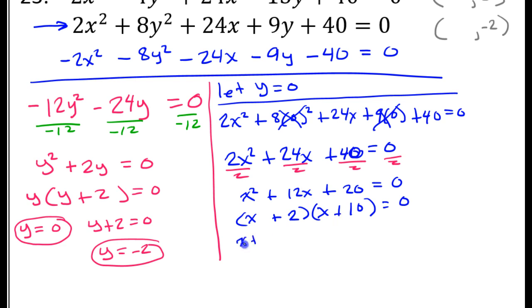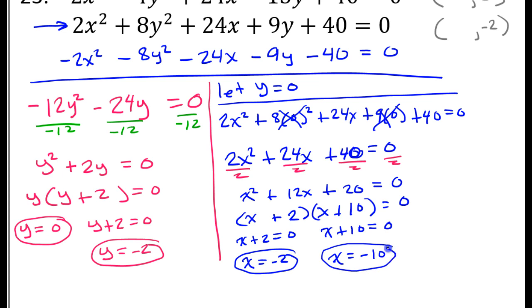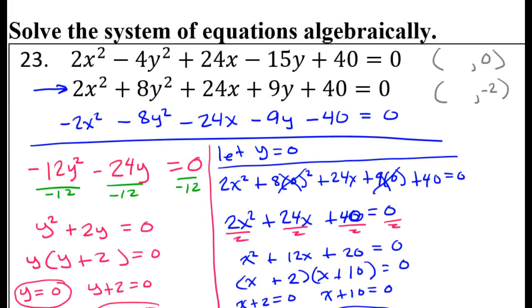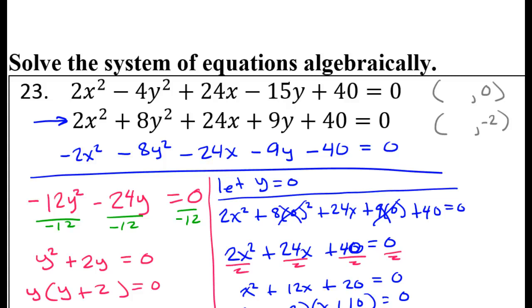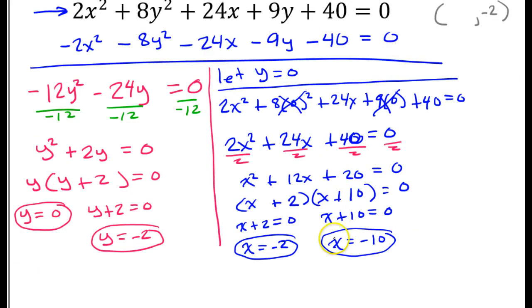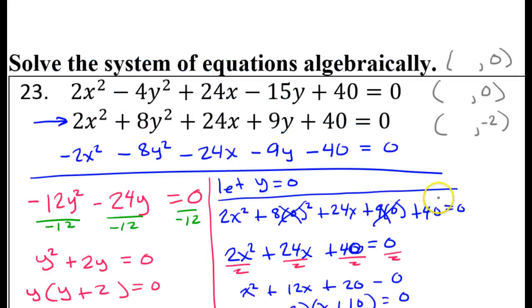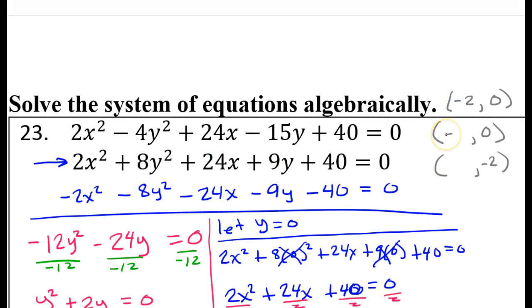Both of these x values came from the same y value of 0, but I only have y equals 0 written down once, so I need to write it again to have space for both x values. My two x values are negative 2 and negative 10, so I have negative 2 comma 0 and also negative 10 comma 0. Those are two solutions so far.